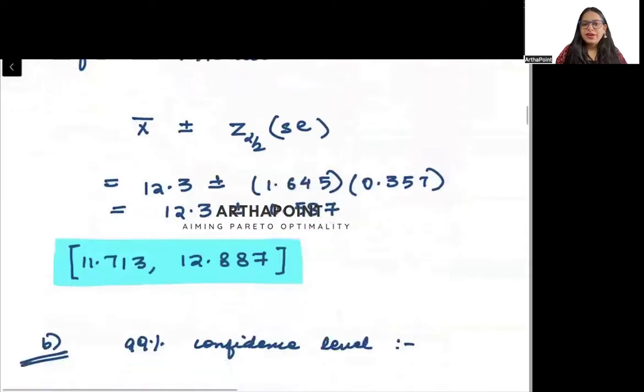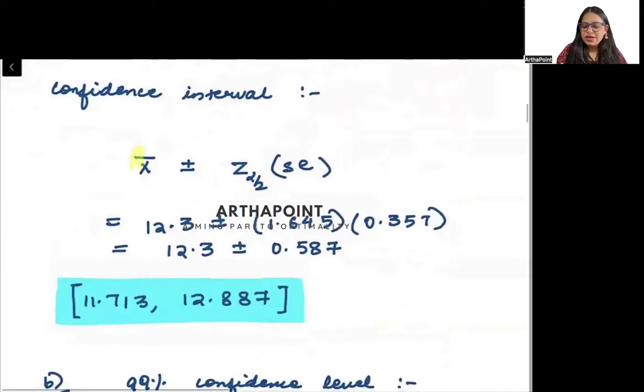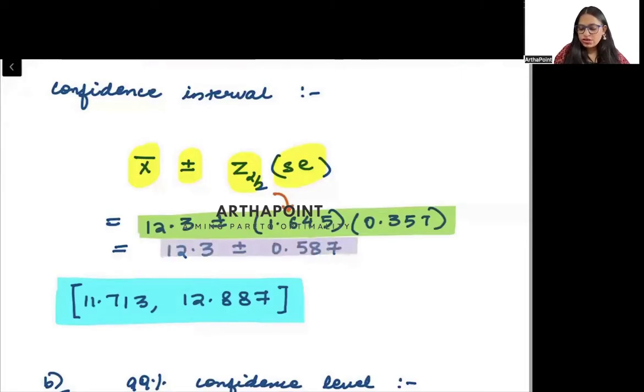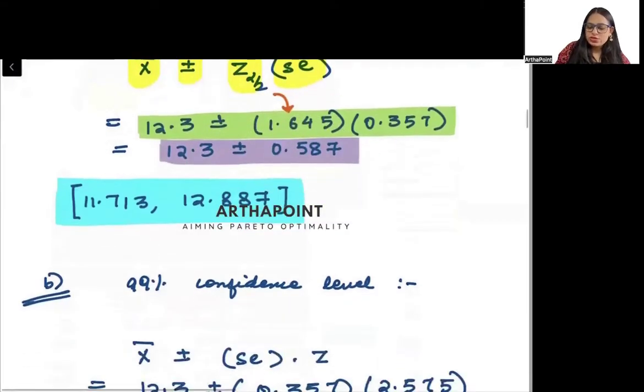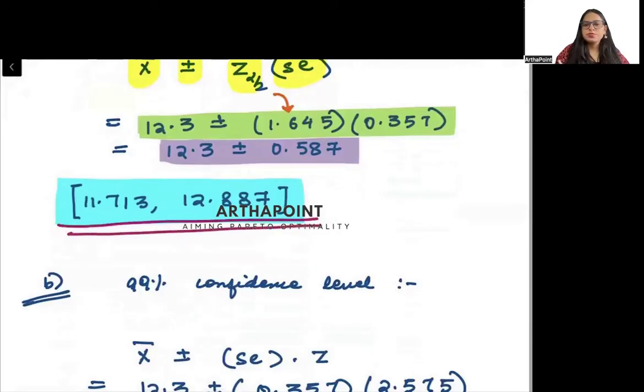Now you will find the confidence interval. The confidence interval will be x bar plus minus the value of z into standard error. So the mean is 12.3 plus minus z value at 90% confidence level will be 1.645 into 0.357. So this is going to give you 12.3 plus minus 0.587. This will be your confidence interval. So they have to wait between 11.71 minutes to 12.887 minutes.